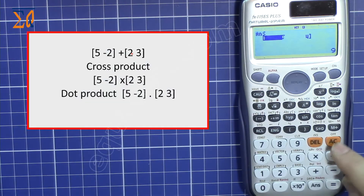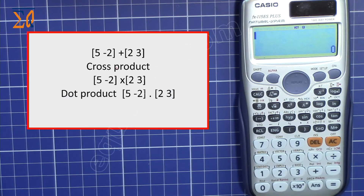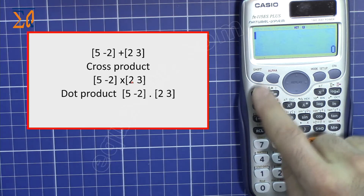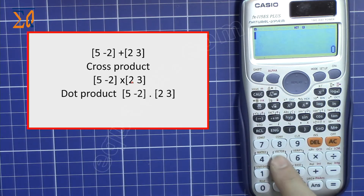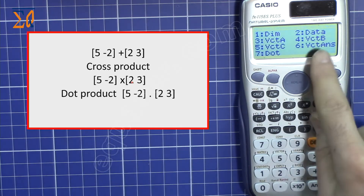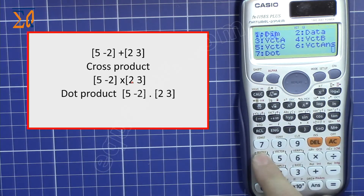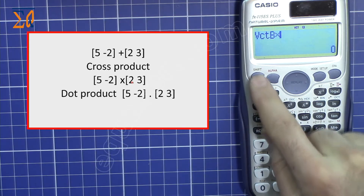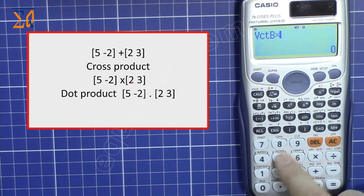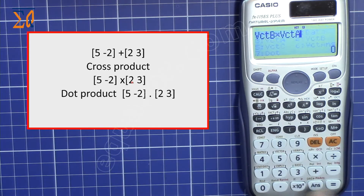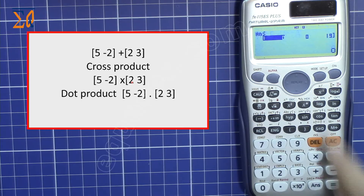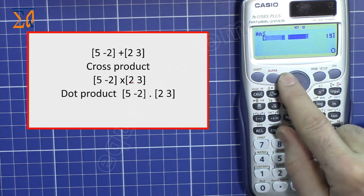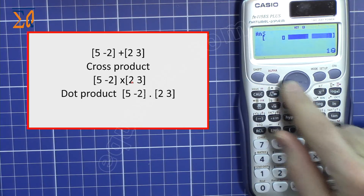To do a cross product, press Shift, vector, then four for vector B, then multiply, then Shift, vector, three for vector A. This gives a three-dimensional result vector.